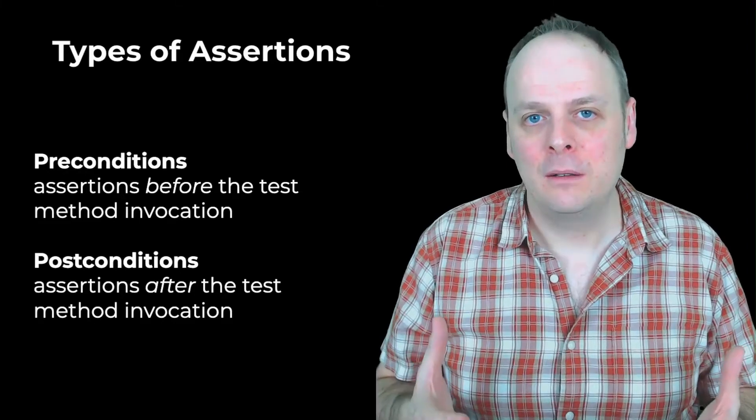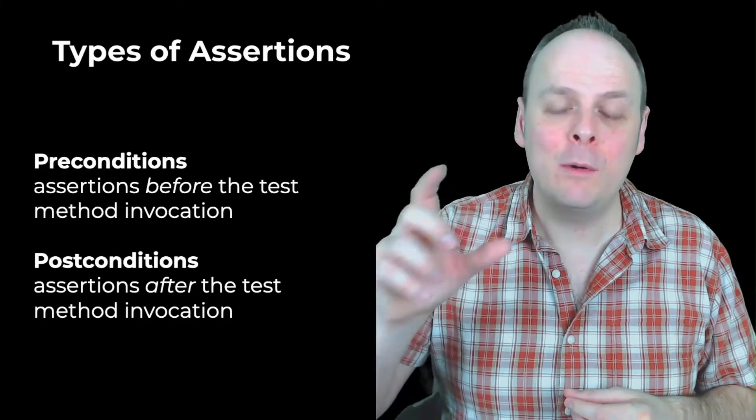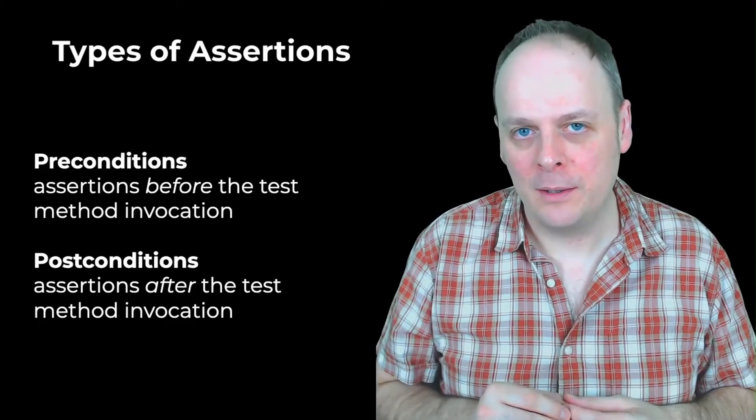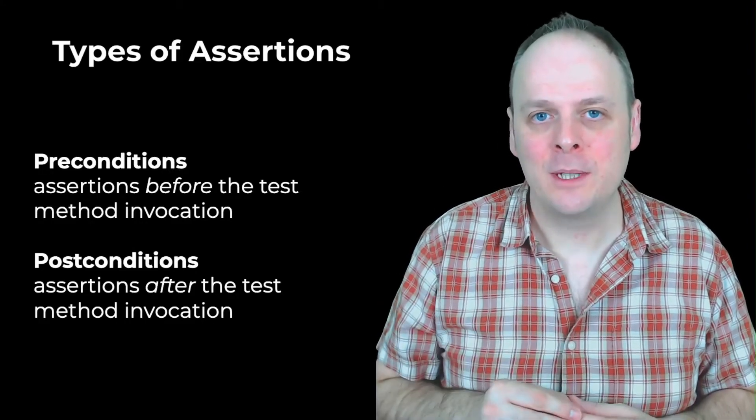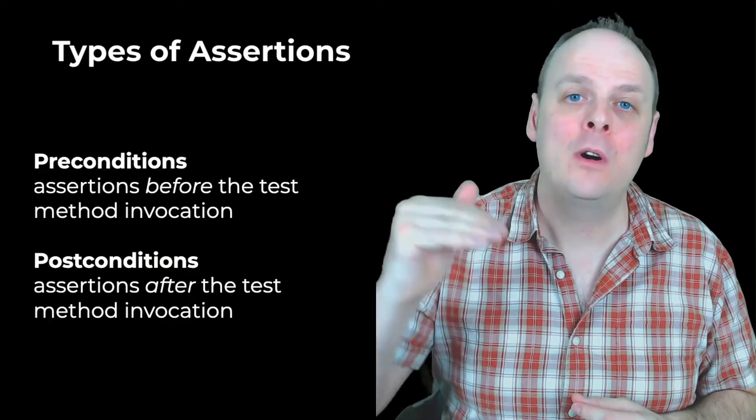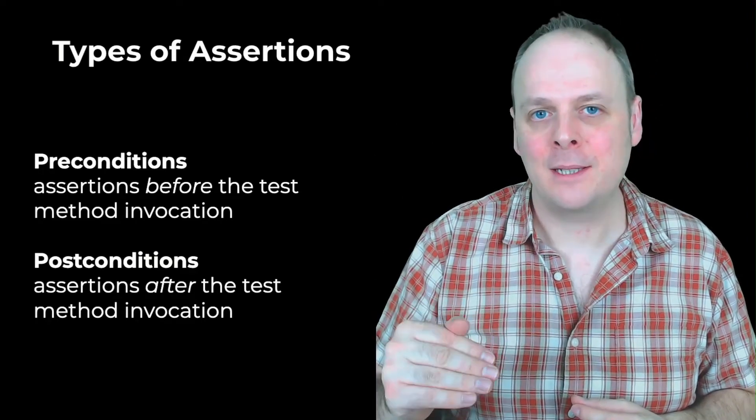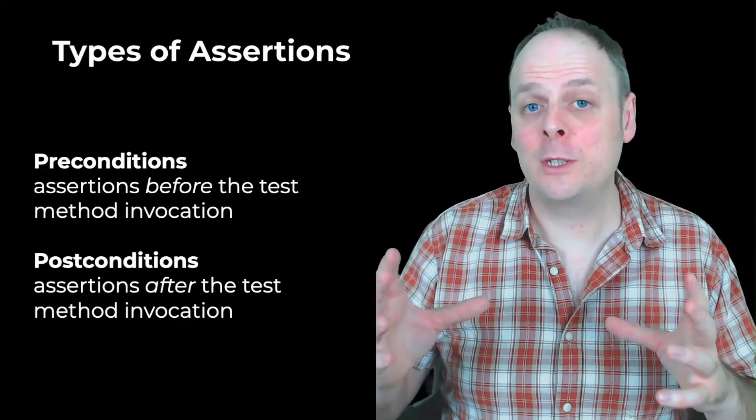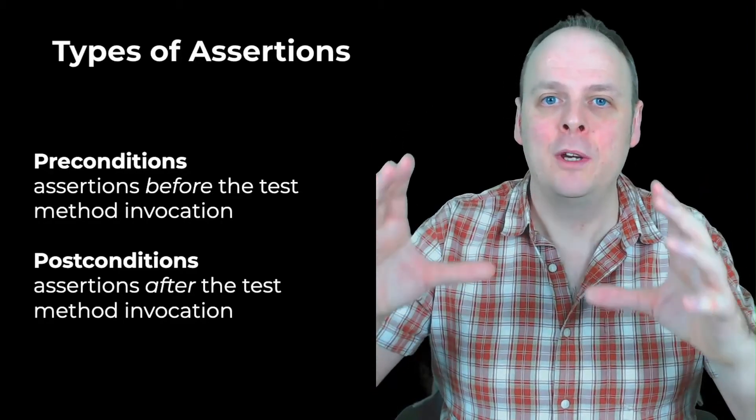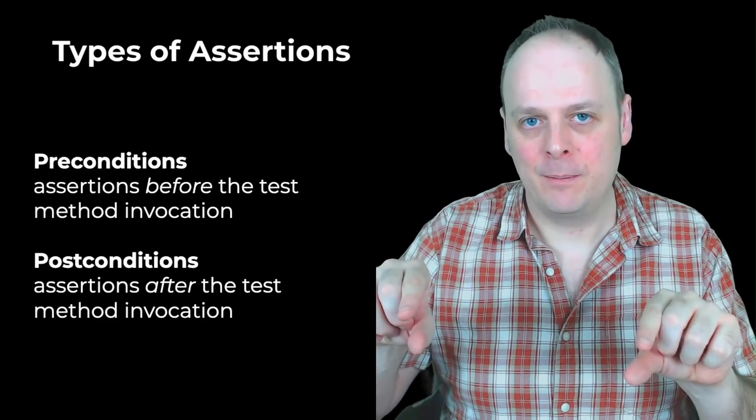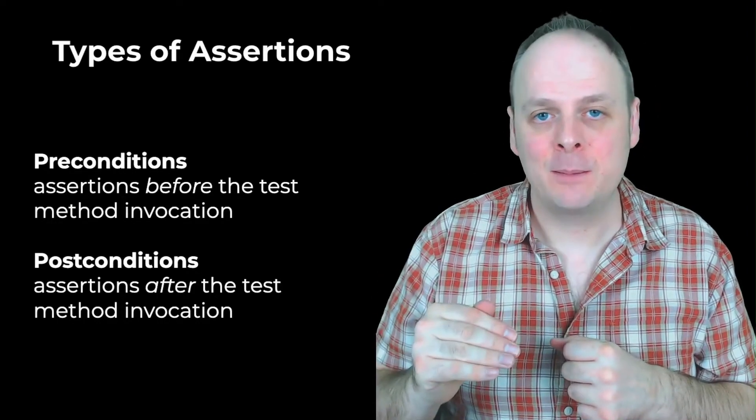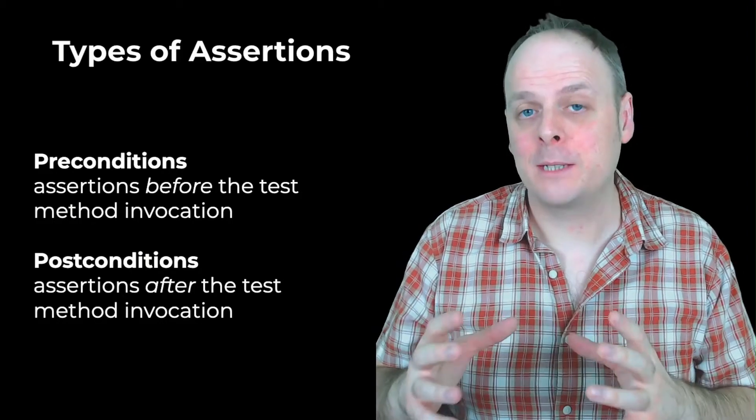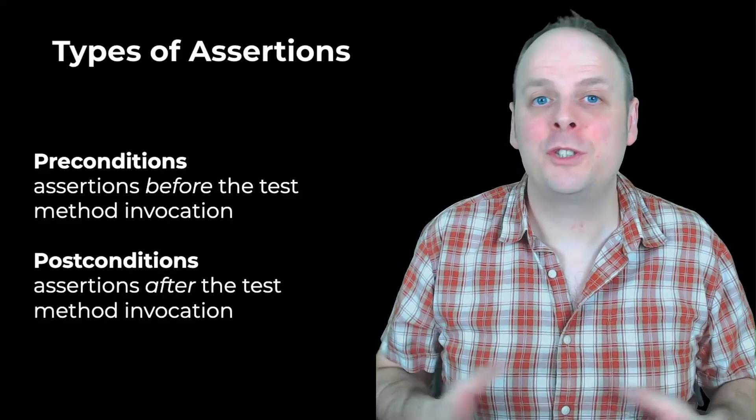We can put assertions at different places in our test case. Depending on where we put the assertions, this determines the type of role those assertions play. Assertions are categorized into two different types, depending upon whether they come before or after the method that's been tested. If they come before, they're known as preconditions. If they come after, they're known as postconditions.